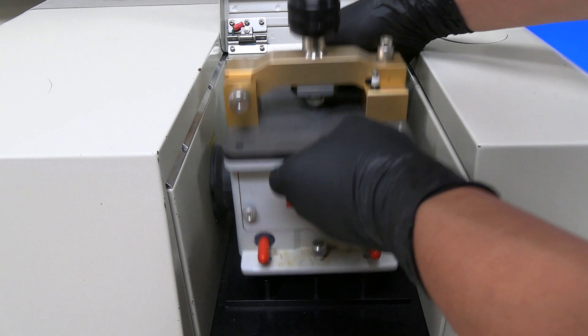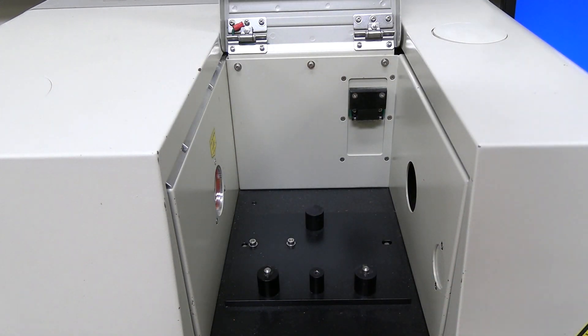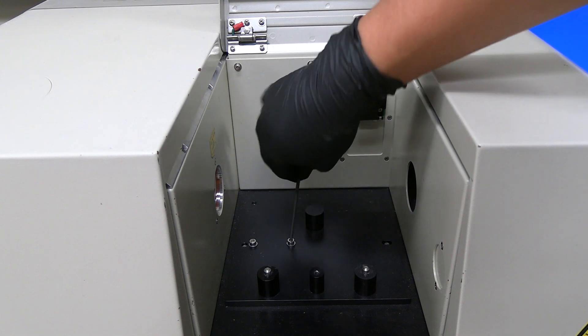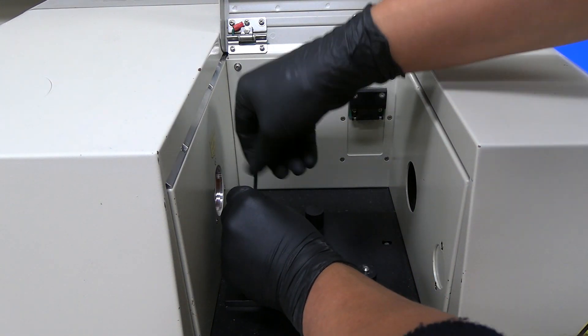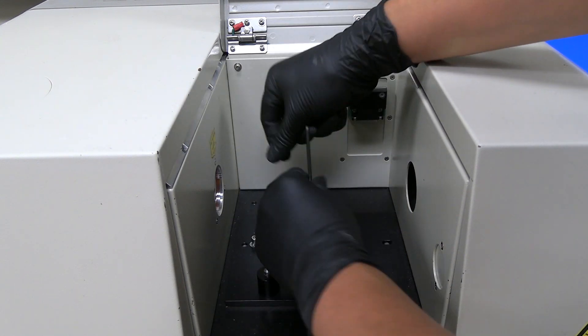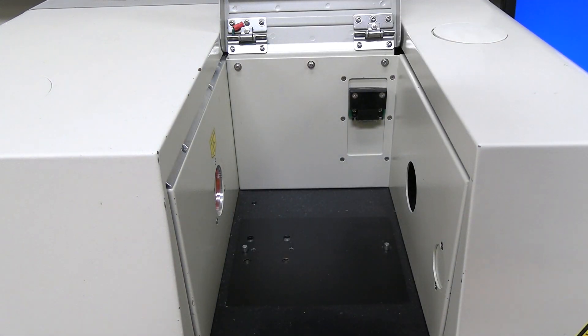Grab the ATR from the platform and carefully pull out the ATR from the cell chamber. Use an Allen key to loosen the two screws that secured the base to the instrument. Be careful not to touch the window on the left side of the cell. Pull out the base plate from the cell chamber.